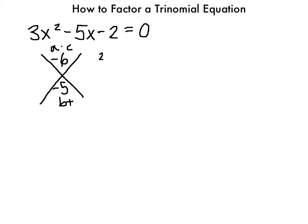The first thing I'd think of is 2 times 3. If they're both negative, they'd add up to negative 5, but both negative gives a positive 6, so that won't work. Let me try 1 and 6. If 6 is negative and 1 is positive, then multiplying gives negative 6 and adding gives negative 5. So those are the numbers I want.